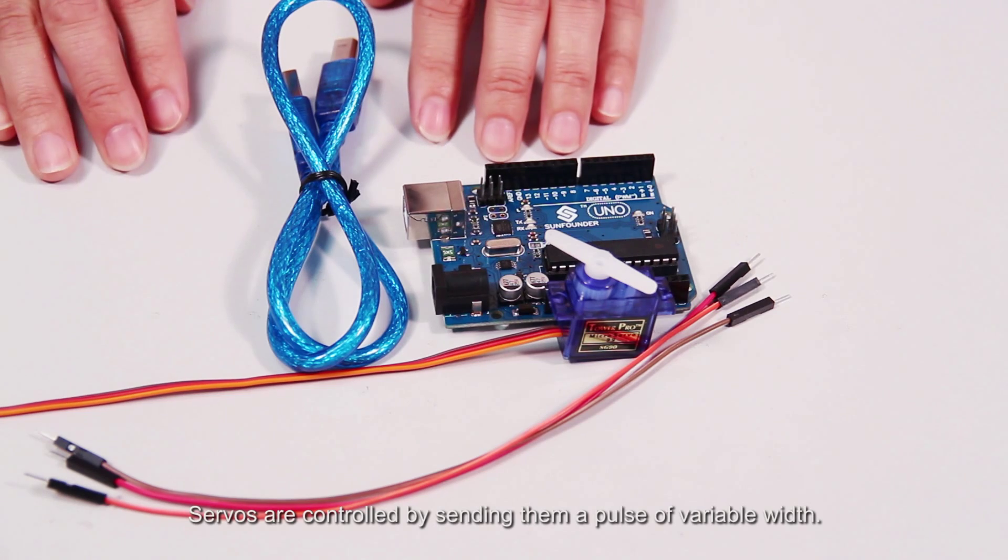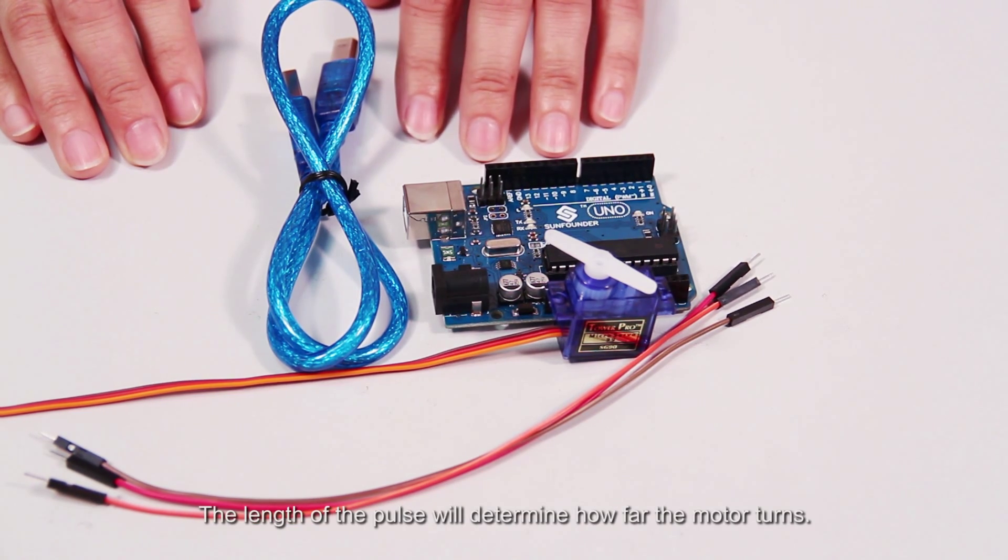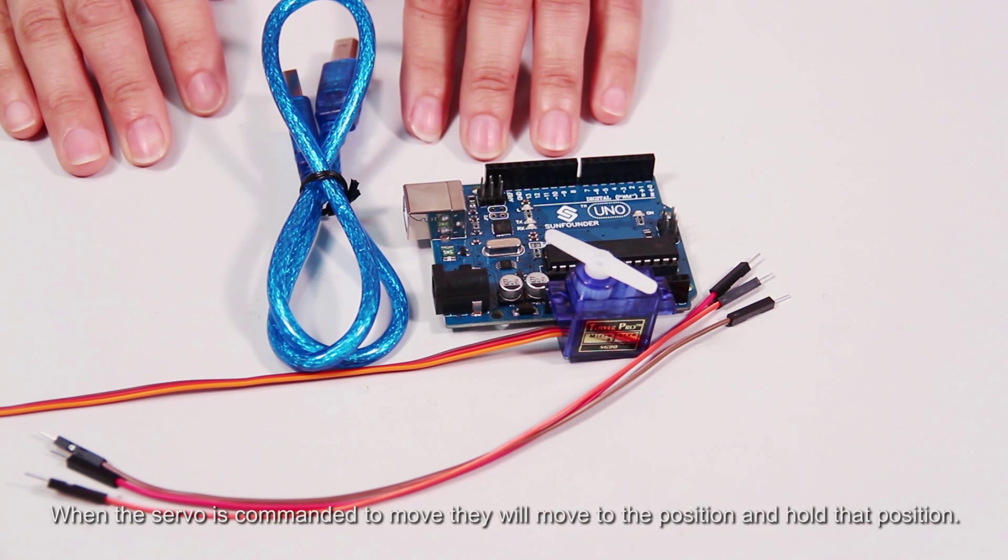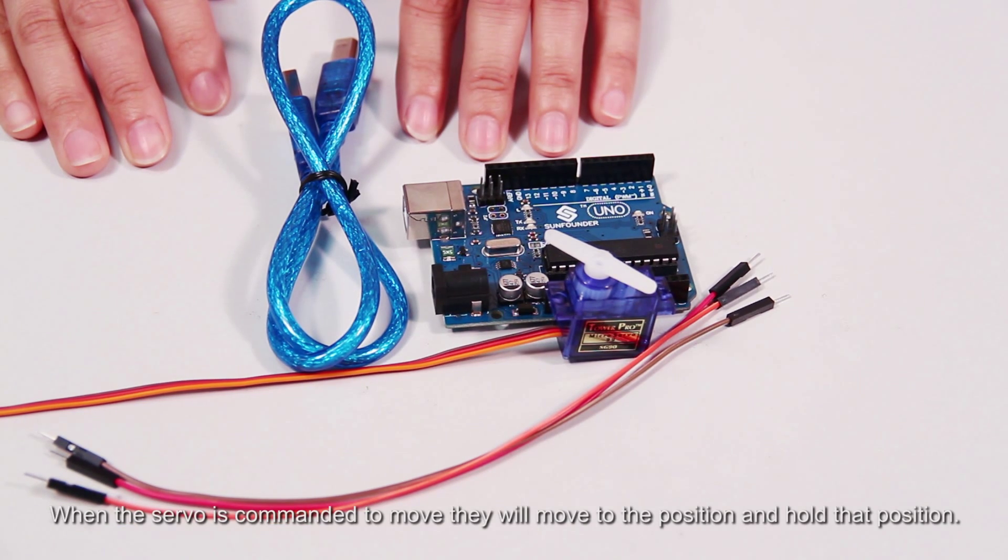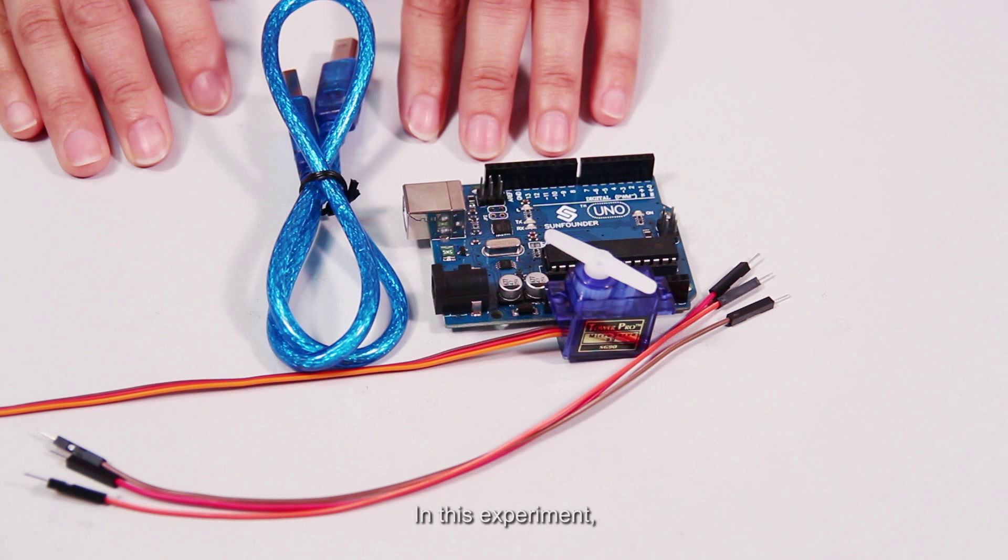Servos are controlled by sending them a pulse of variable width. The length of the pulse will determine how far the motor turns. When the servo is commanded to move, they will move to the position and hold that position. If an external force pushes against the servo while the servo is holding a position, the servo will resist from moving out of that position.